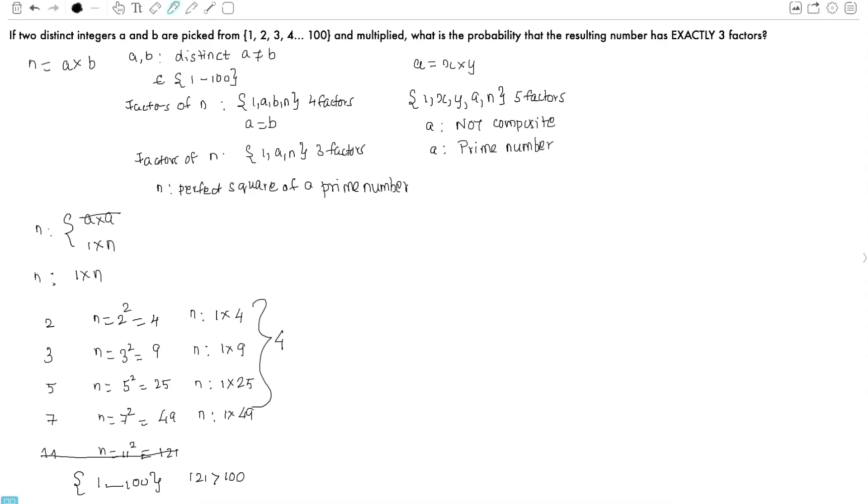Next, let us compute the probability that the number has exactly 3 factors. Probability is nothing more than the number of favorable outcomes divided by the total number of outcomes. Here, the number of favorable outcomes is 4 as we just calculated. However, we do not know yet what the total number of outcomes is. To do so, let us calculate the total number of outcomes.